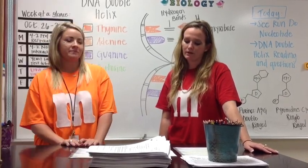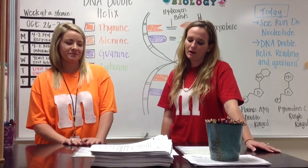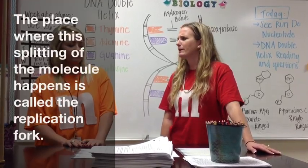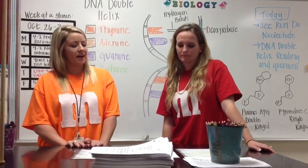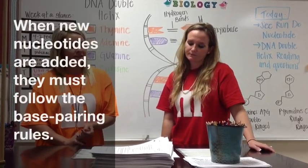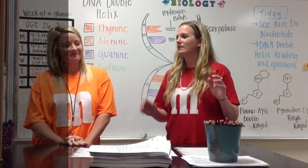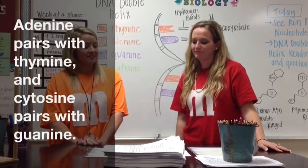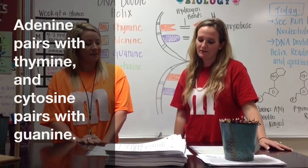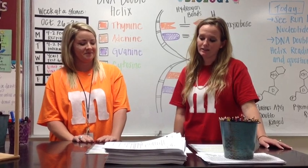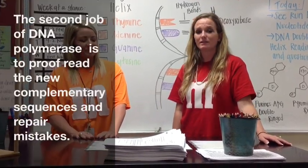The place where this splitting of the molecule happens is called the replication fork. Do you remember the rules for base pairing? Adenine pairs with thymine and cytosine pairs with guanine — A pairs with T and C pairs with G. So when those new nucleotides are added, what happens when A accidentally pairs with C? That's the second job of DNA polymerase: it proofreads the new complementary sequences being formed and repairs any mistakes it finds.